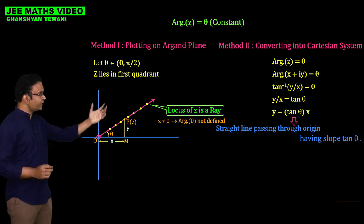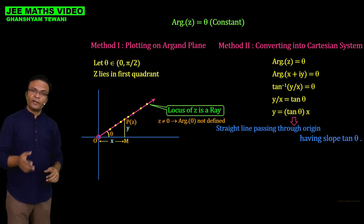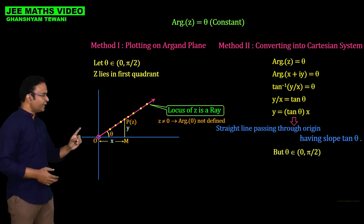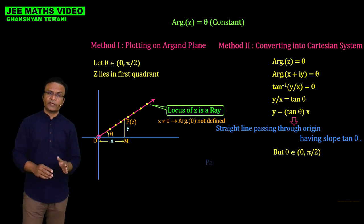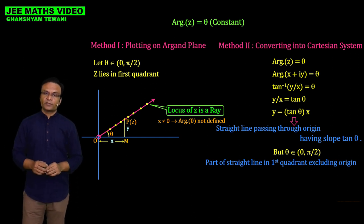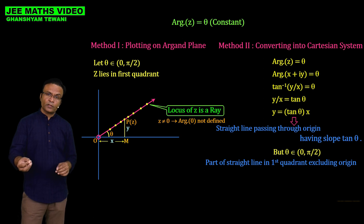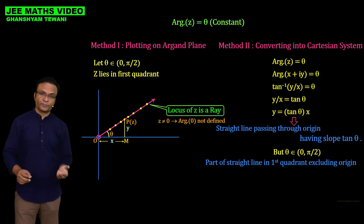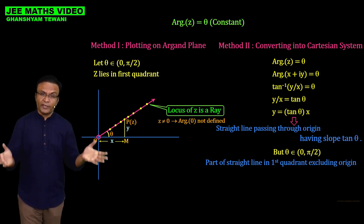But since this locus is originally given in the form of complex numbers where theta is an argument, and we assumed theta belongs to 0 to pi by 2, we would not get the entire straight line. In fact, we will have only the part of the straight line lying in the first quadrant, excluding the origin. Whenever you convert any equation of complex number into Cartesian form, you must consider the constraint in the original equation, because argument has specific values in different quadrants.